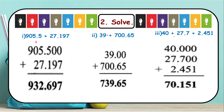Next we have 40 plus 27.7 plus 2.451. The largest decimal portion is held by 2.451. After decimal only one digit is there in 27.7, so we add 2 zeros, and for 40 there is no decimal portion so we add 3 zeros. After adding we get the value as 70.151.